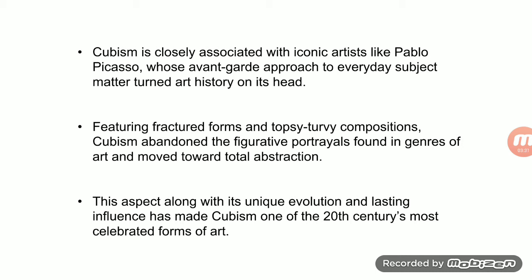Before Cubism, in Fauvism, Post-Impressionism, or Impressionism, artists painted figures with a proper outline. But Picasso's approach was totally abstract, taken into abstraction. This, along with its unique evolution, made Cubism one of the 20th century's most celebrated forms of art. Figures and objects were divided abstractly into shapes — this was the main feature of this movement.